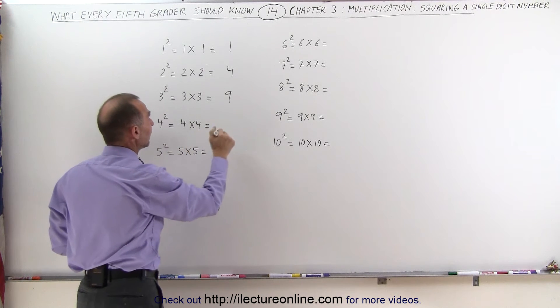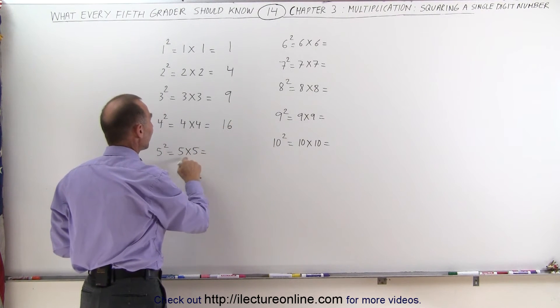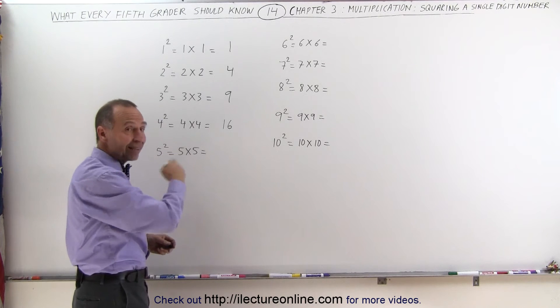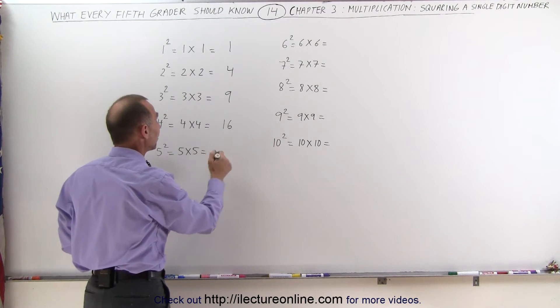Now 4 times 4 is 16. 5 times 5 is half of 10 times 5, which is 50, half of 50 is 25.